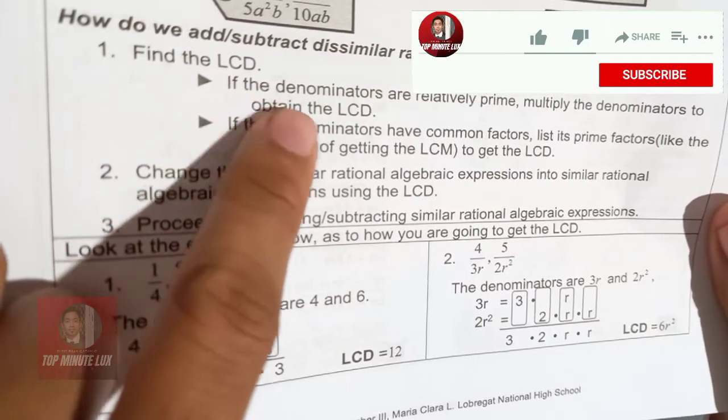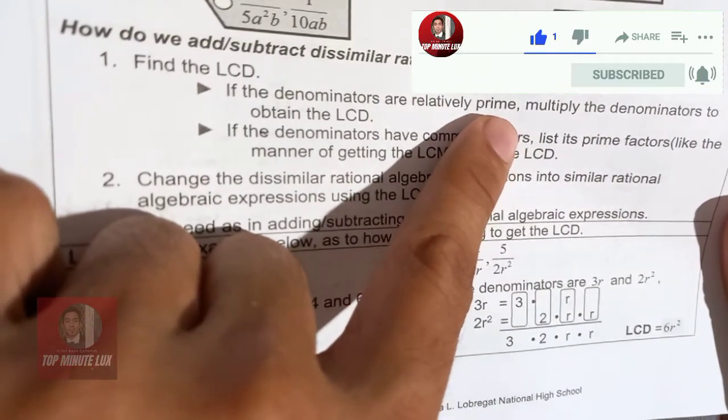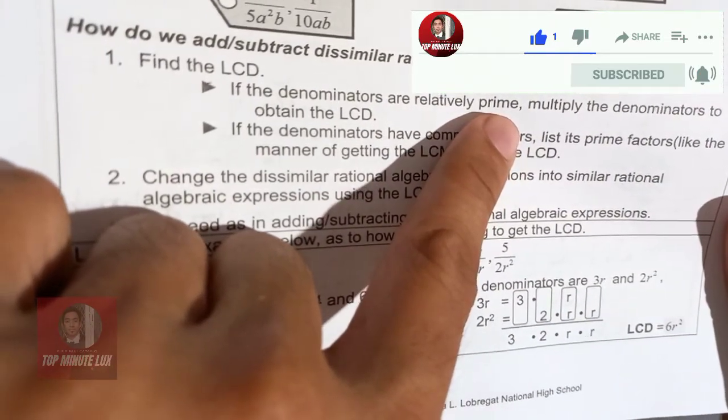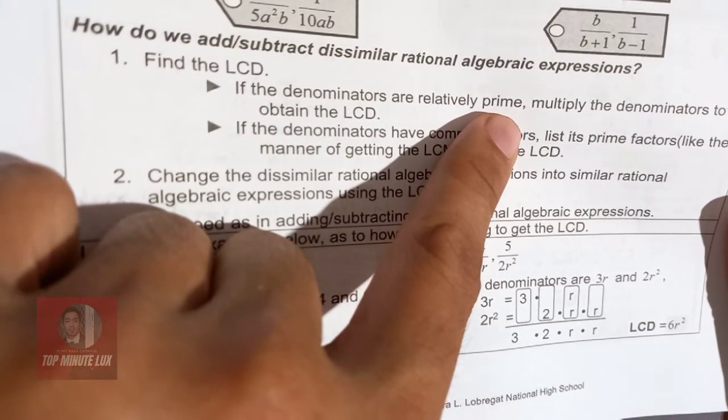The very first is that if the denominators are relatively prime, it means to say it consists of numbers like 1, 2, 3, 5, 7, 11, 13.